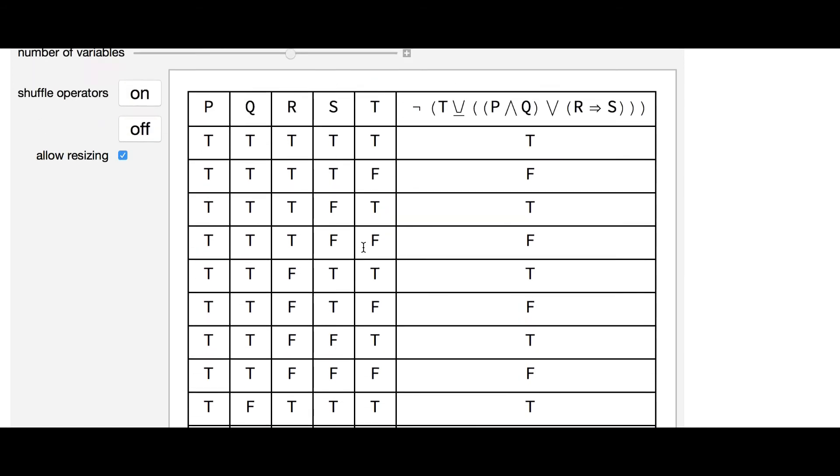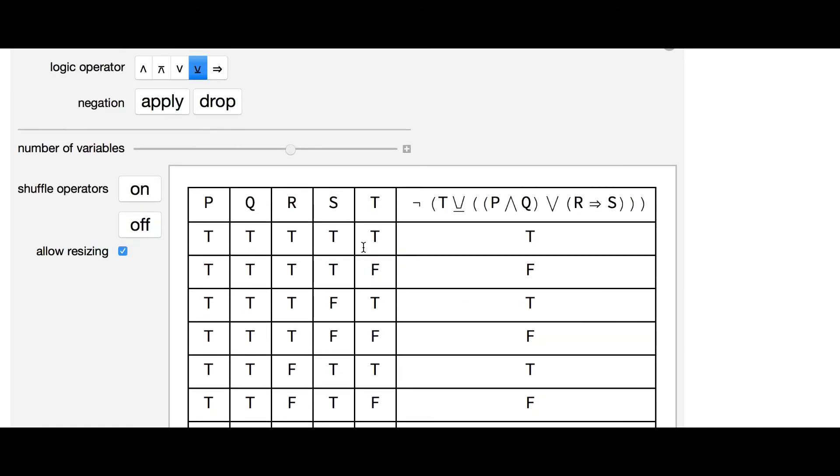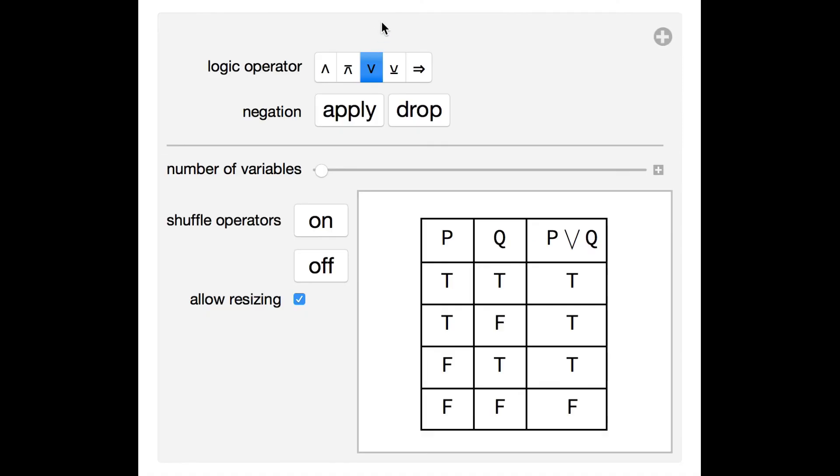It now can be clearly seen how this simple logic can be deeply connected to causality. For example, the formulae P or Q can only be true if either P, Q or both are true. And thus, the observation that P or Q is true or false tells us something about the truth value of the causes, that is, the truth values of P and Q individually as a cause, for its truth value result as a formula to be true or false.